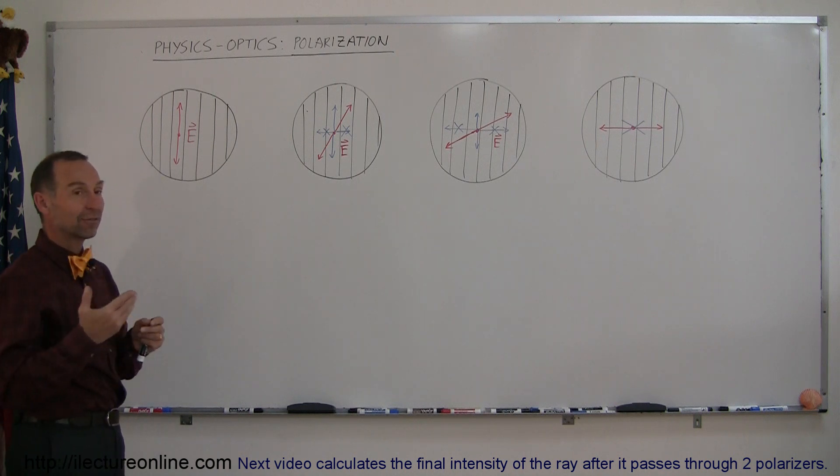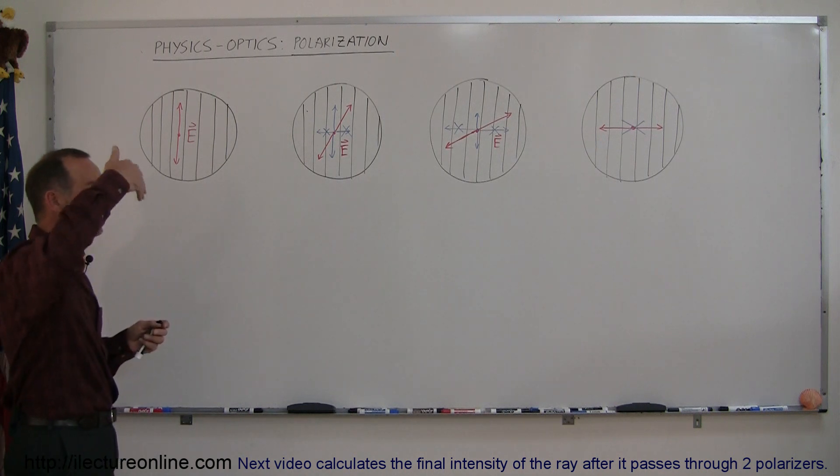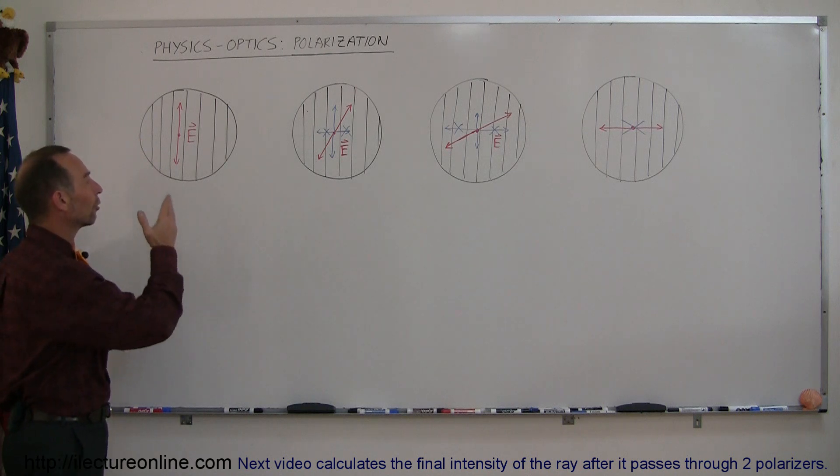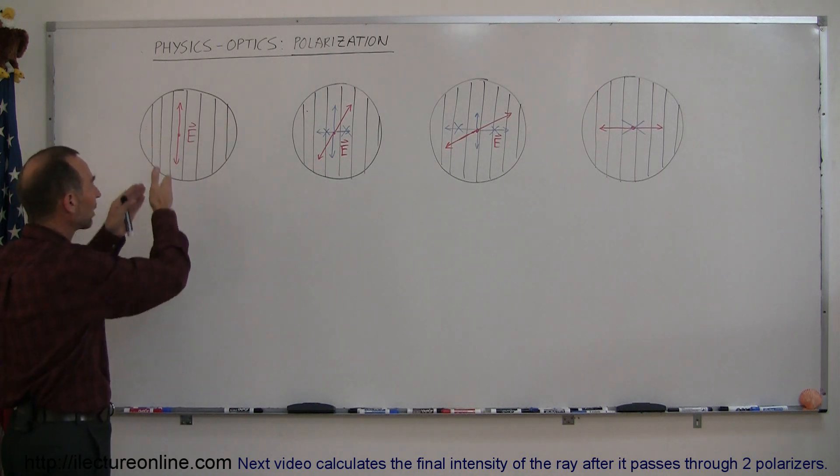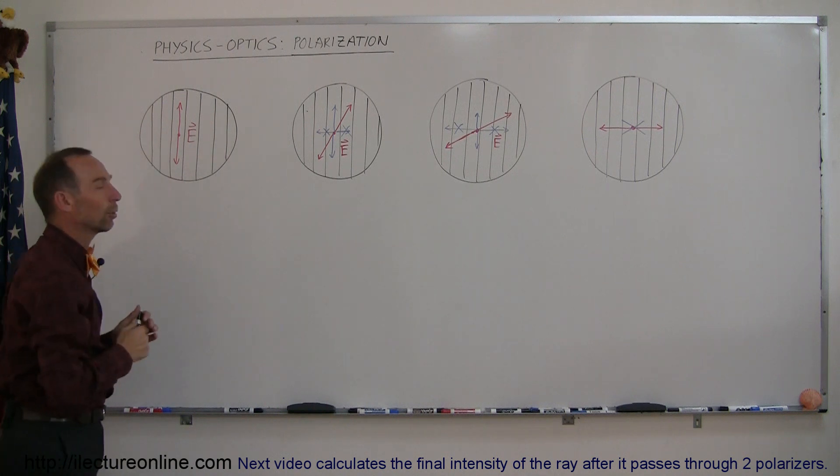Now, if we have, let's say, light that comes in with the electric field oscillations going vertically and the polarizers are oriented vertically, then the light has no trouble getting through, it goes right through the polarizer unchanged.